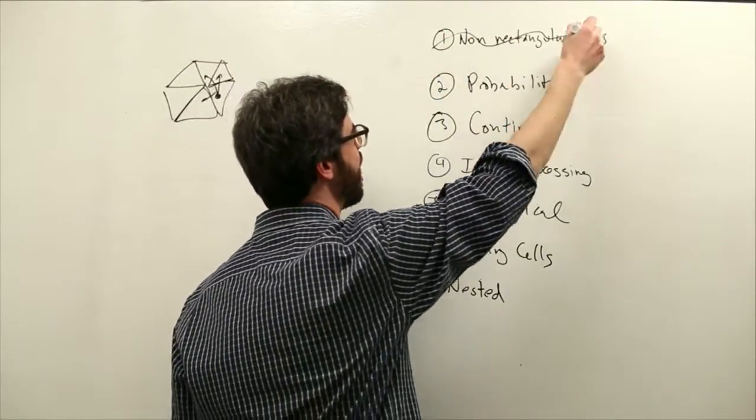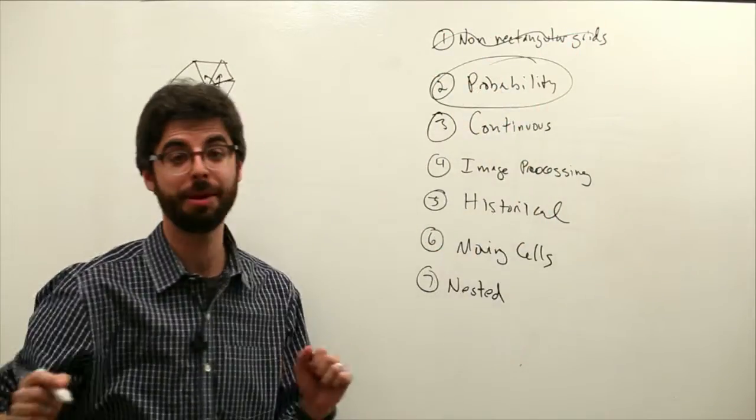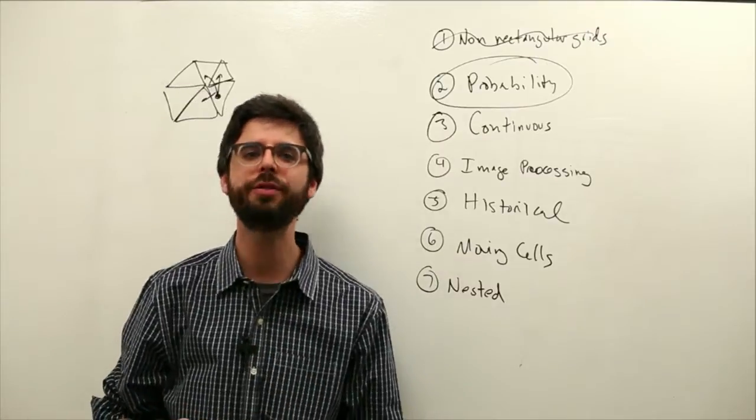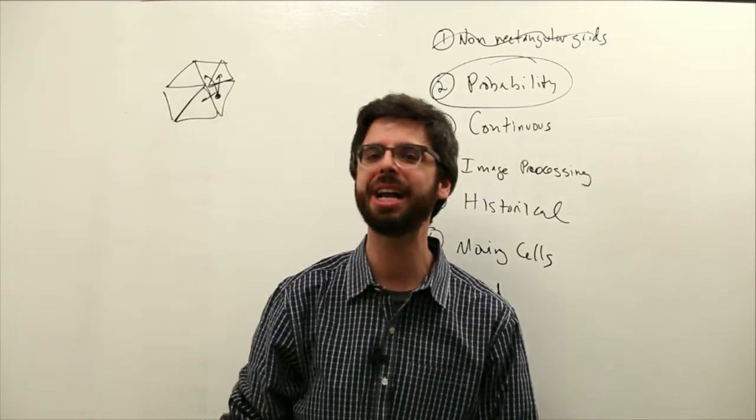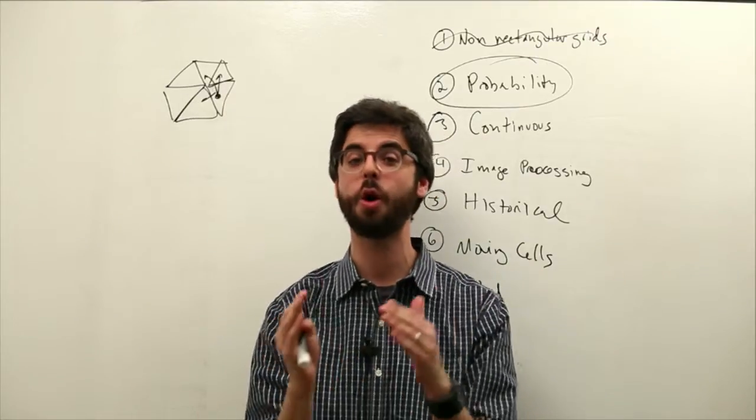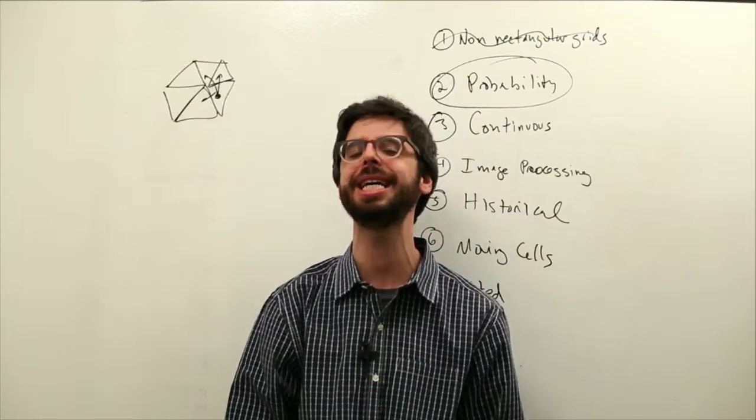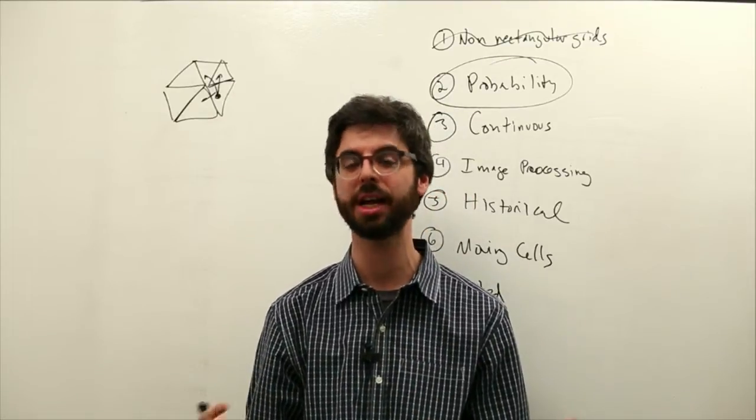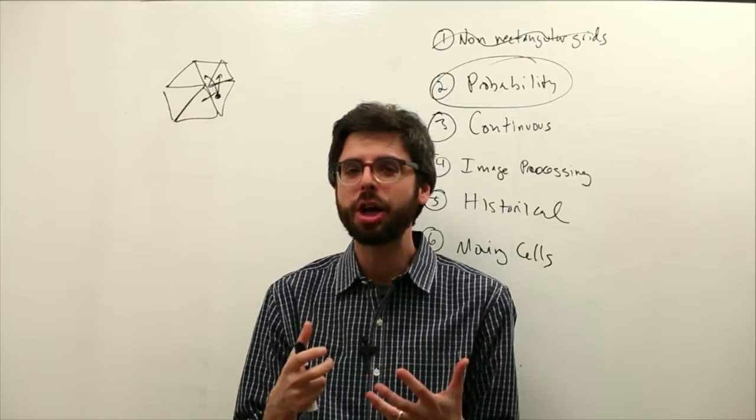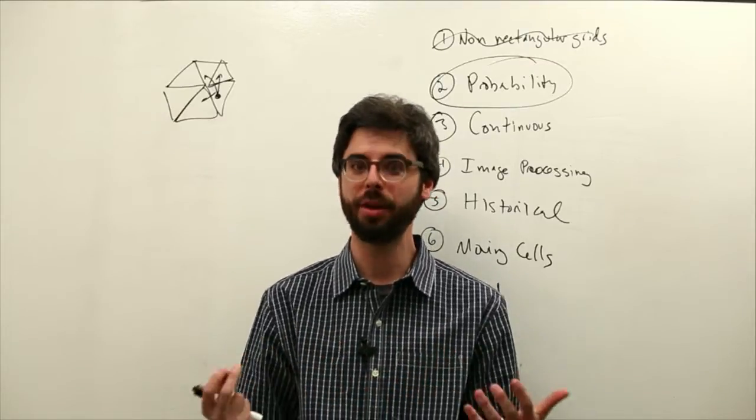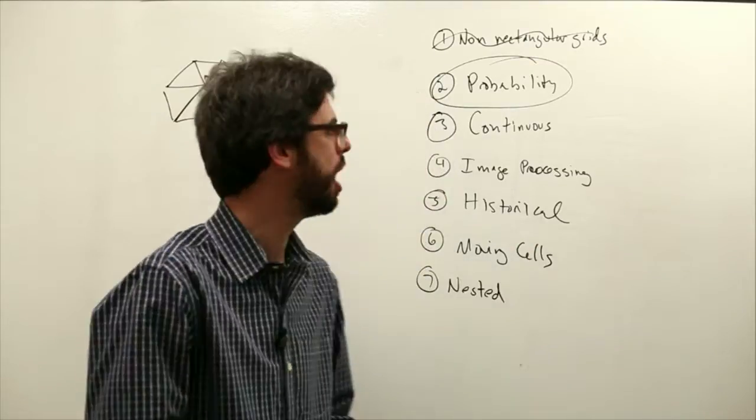Another thing that you might think about, and this would be a simple exercise to implement, is probability. What if you said in the game of life, instead of a cell dying when it's overpopulated, it has an 80% chance of dying. What type of behavior would you get if you made the outcomes tied to probabilities? And what if those probabilities changed over time?